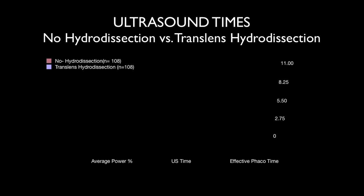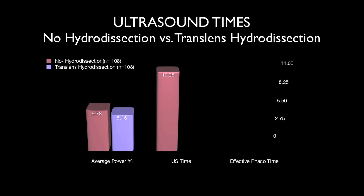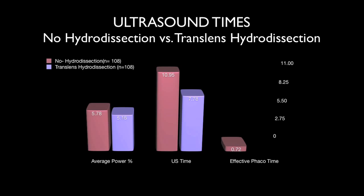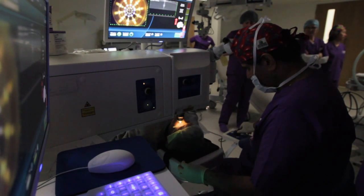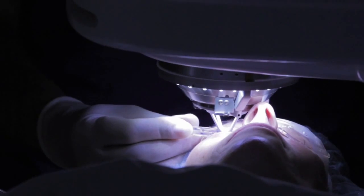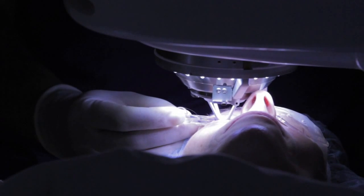To evaluate the effectiveness of translenticular hydrodissection, we compared our first 27 cases in which hydrodissection was inadequate or not performed at all to the subsequent 81 cases. Again, there was a statistically significant reduction of ultrasound times using the method of translenticular hydrodissection. In over 450 cases, there have been no episodes of posterior capsular rupture using this technique.